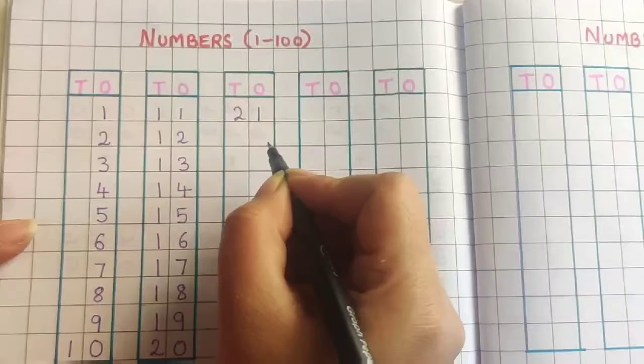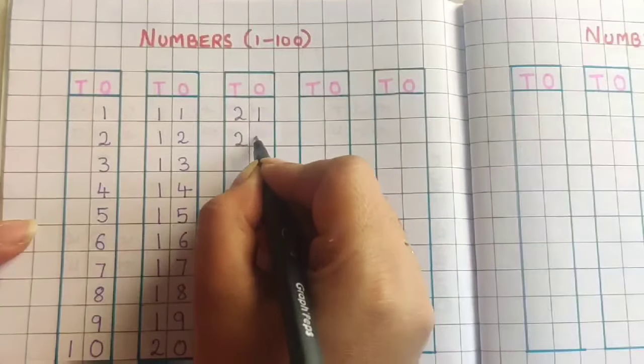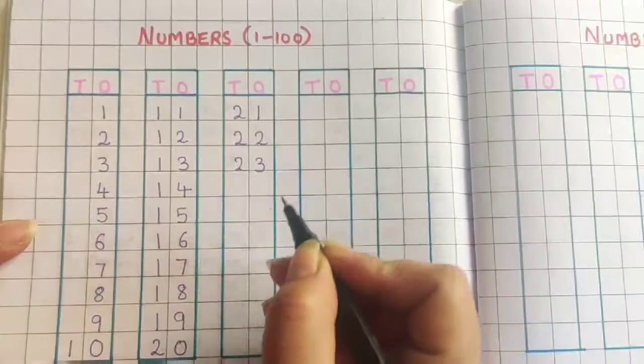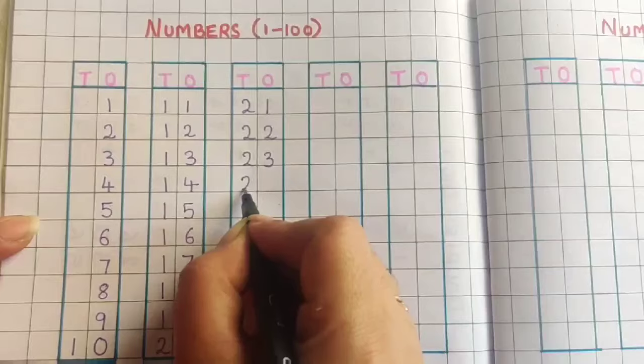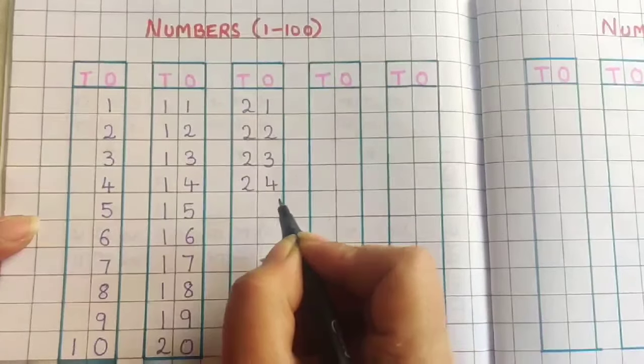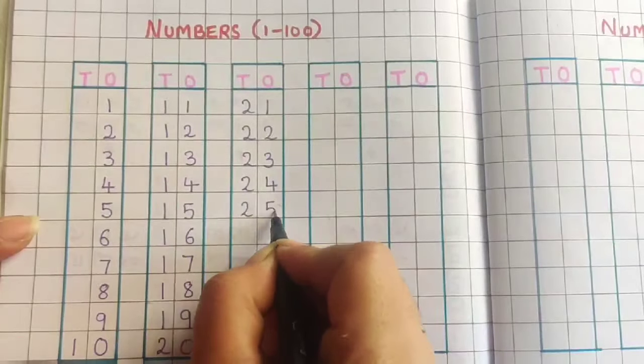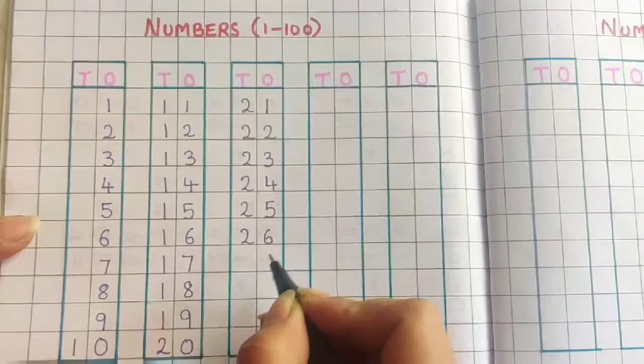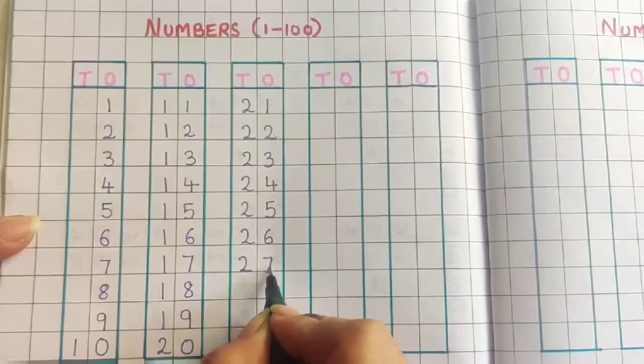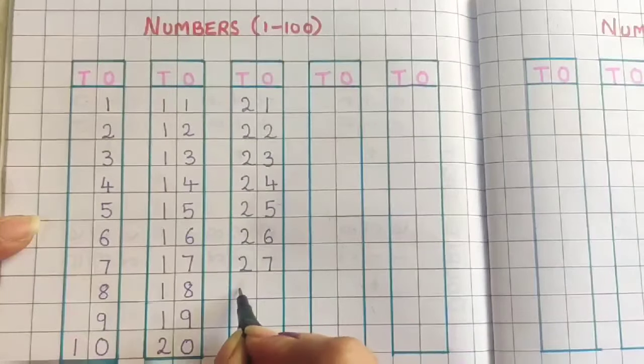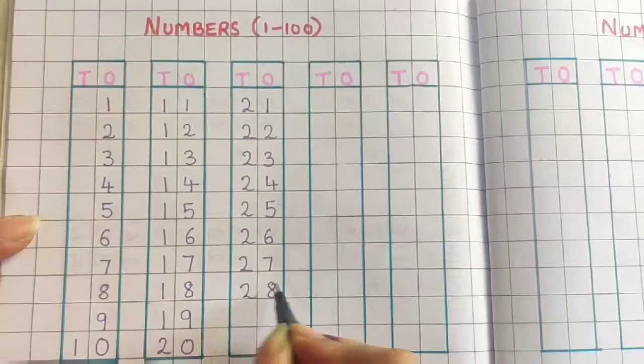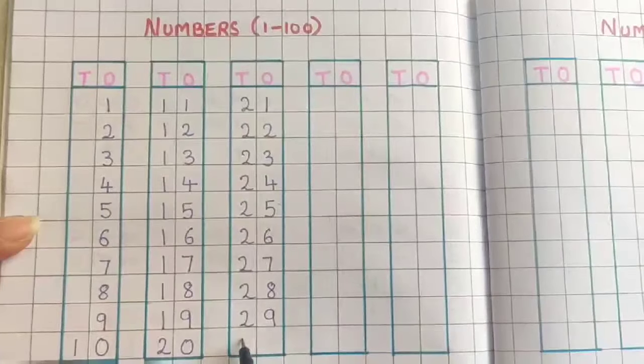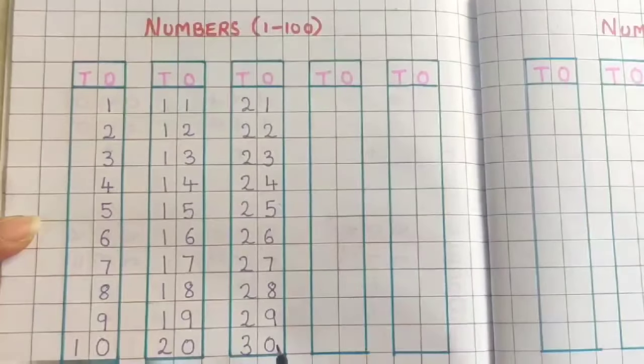2, 1, 21. 2, 2, 22. 2, 3, 23. 2, 4, 24. 2, 5, 25. 2, 6, 26. 2, 7, 27. 2, 8, 28. 2, 9, 29. 3, 0, 30.